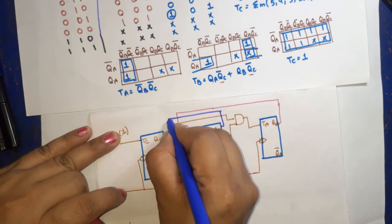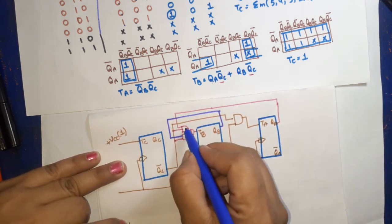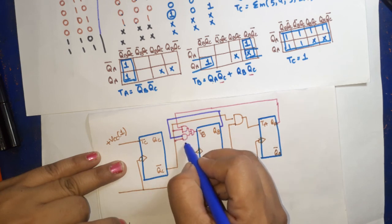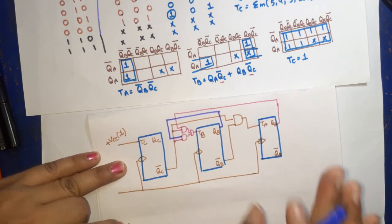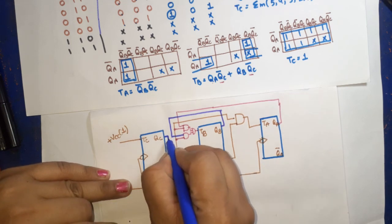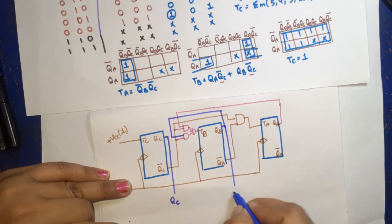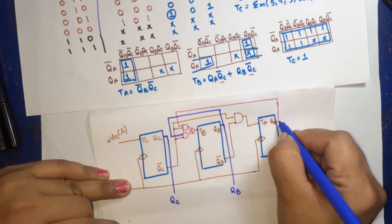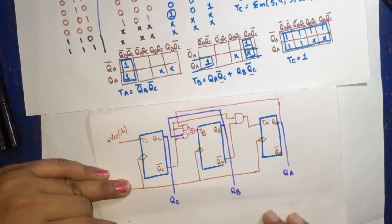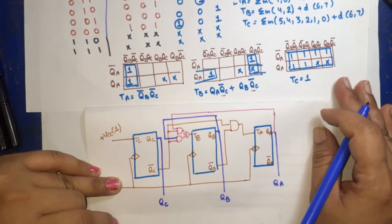So this is the diagram for mod-6 down counter. We have three flip-flops connected with clock, TC connected to logic 1, TA implemented with QB bar and QC bar through AND gate, and TB implemented with two AND gates and one OR gate using QA, QB, and QC bar.